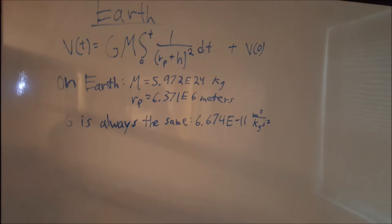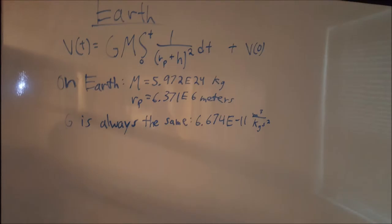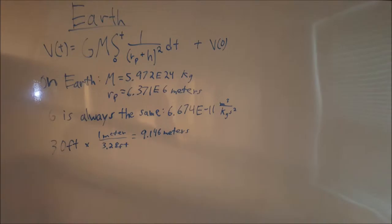To compare the velocities, we took the values for Earth and found the velocity to be 36.3 meters per second, which is substantially larger than on Mars.